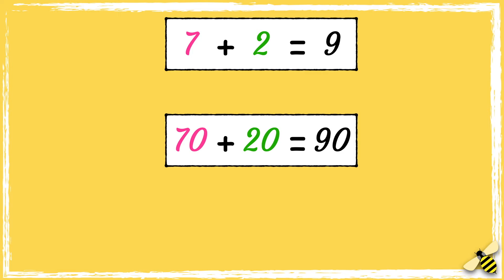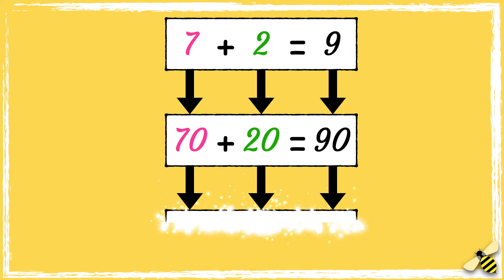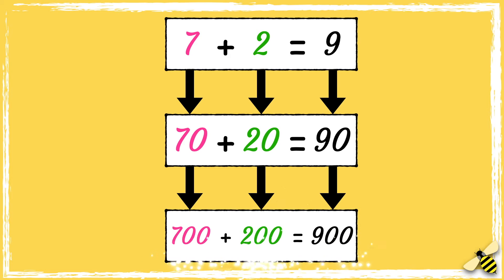So we use the related fact that 7 add 2 equals 9 to work out that 70 add 20 equals 90. We can also work out that 700 add 200 equals 900.